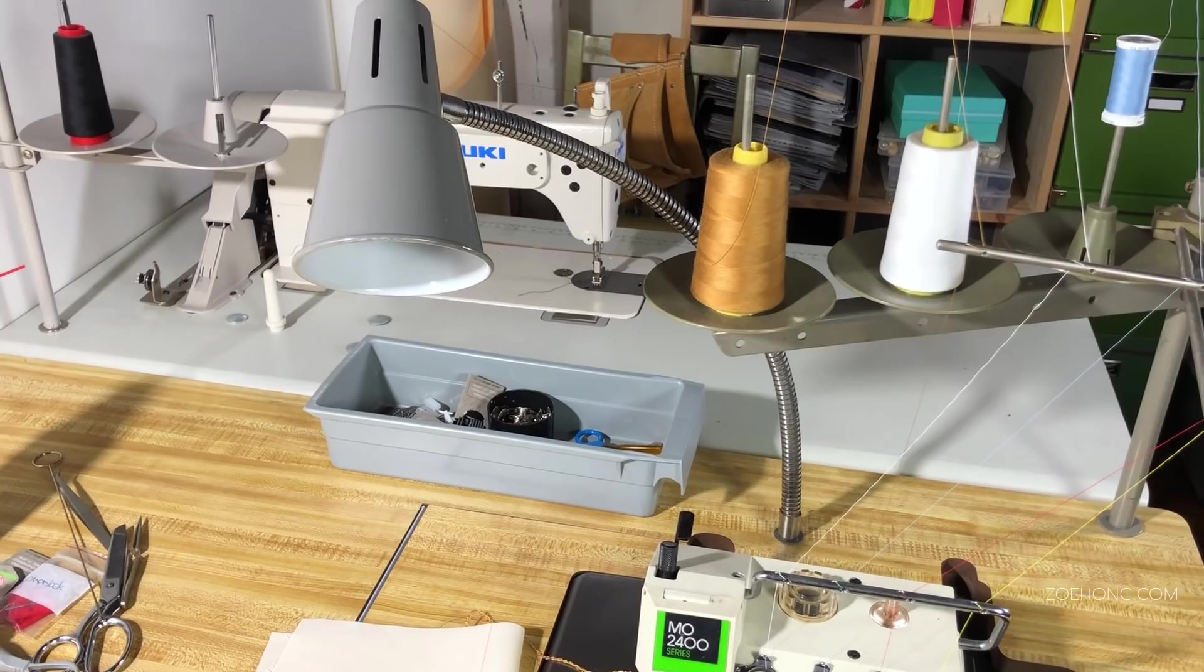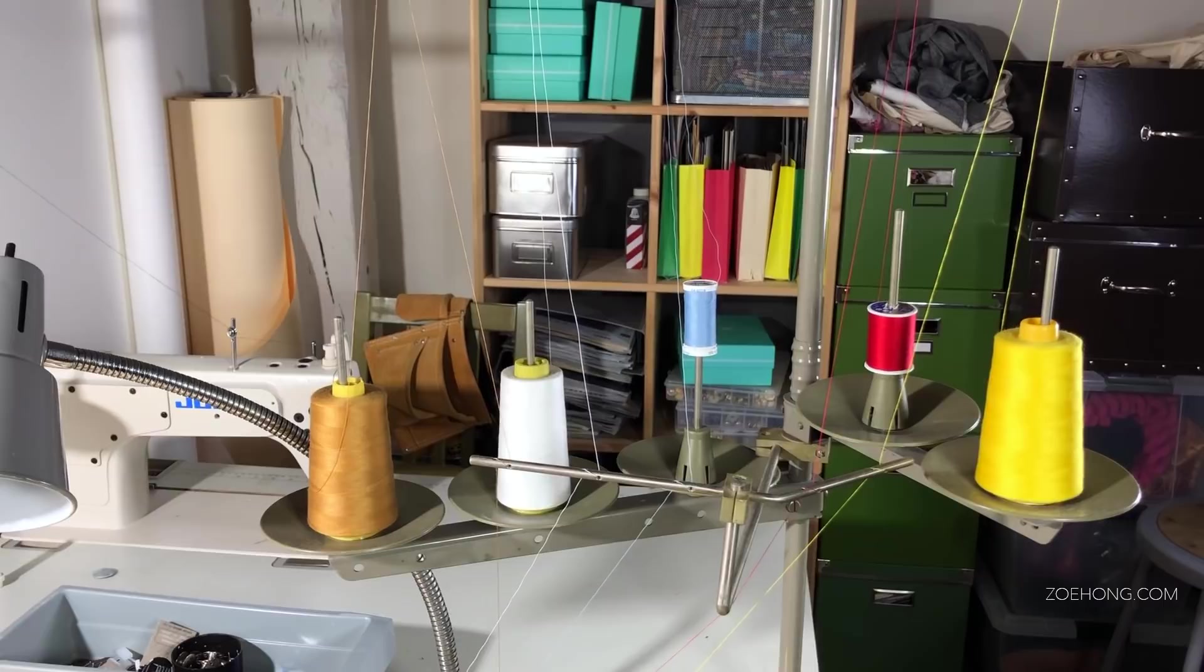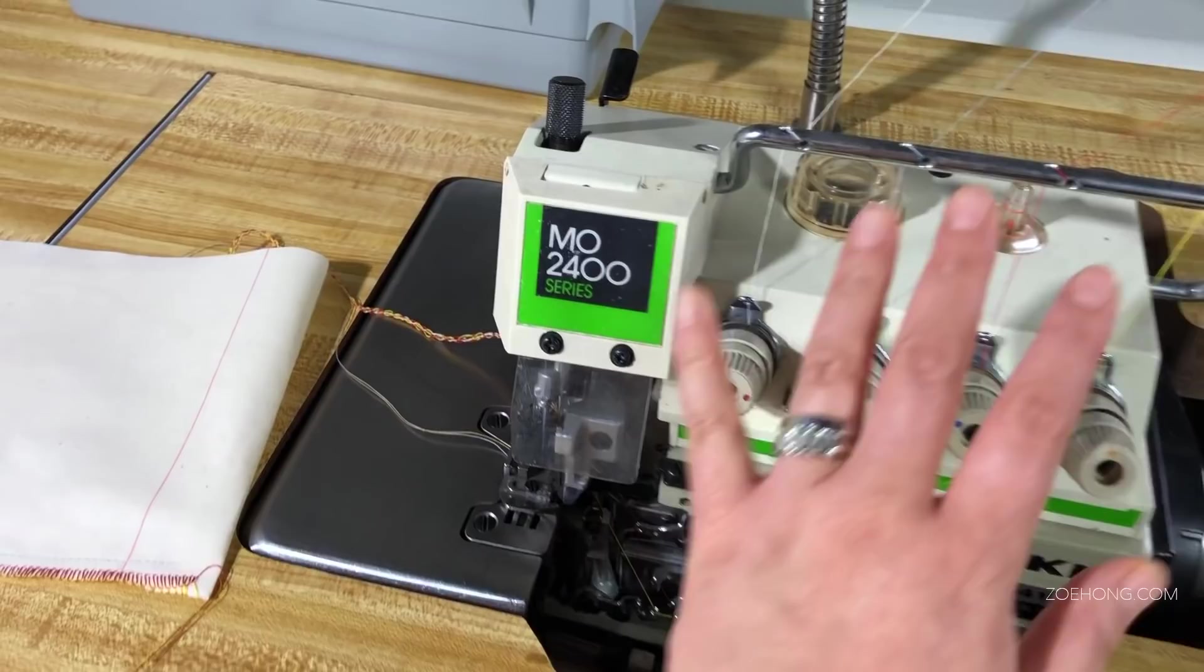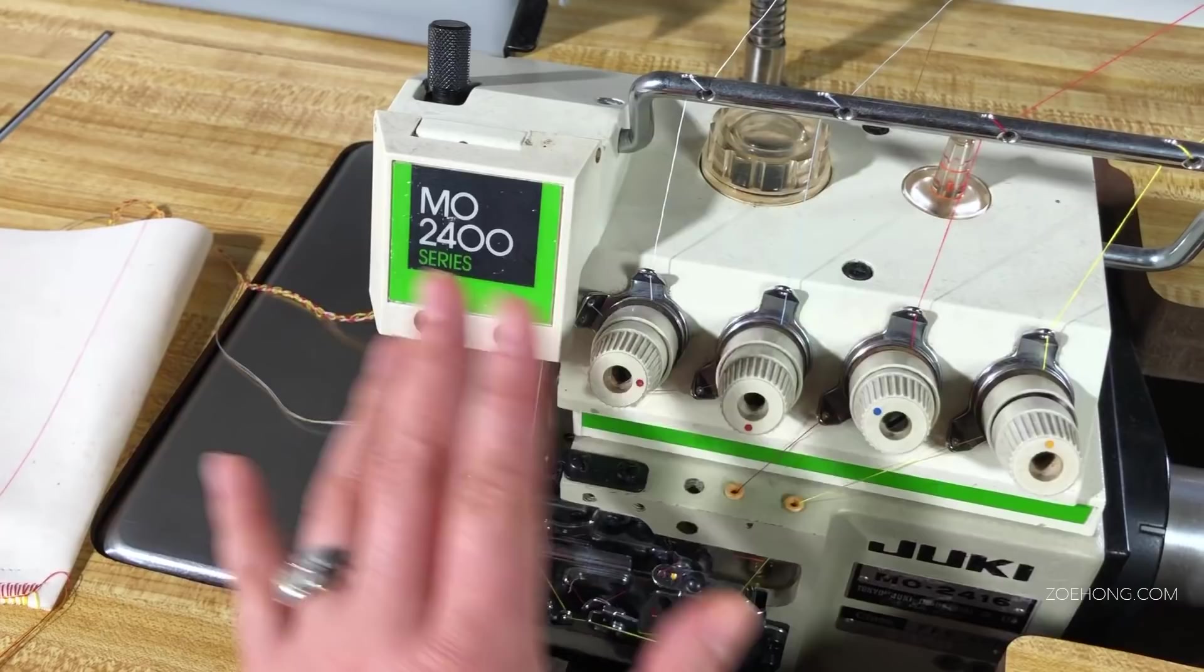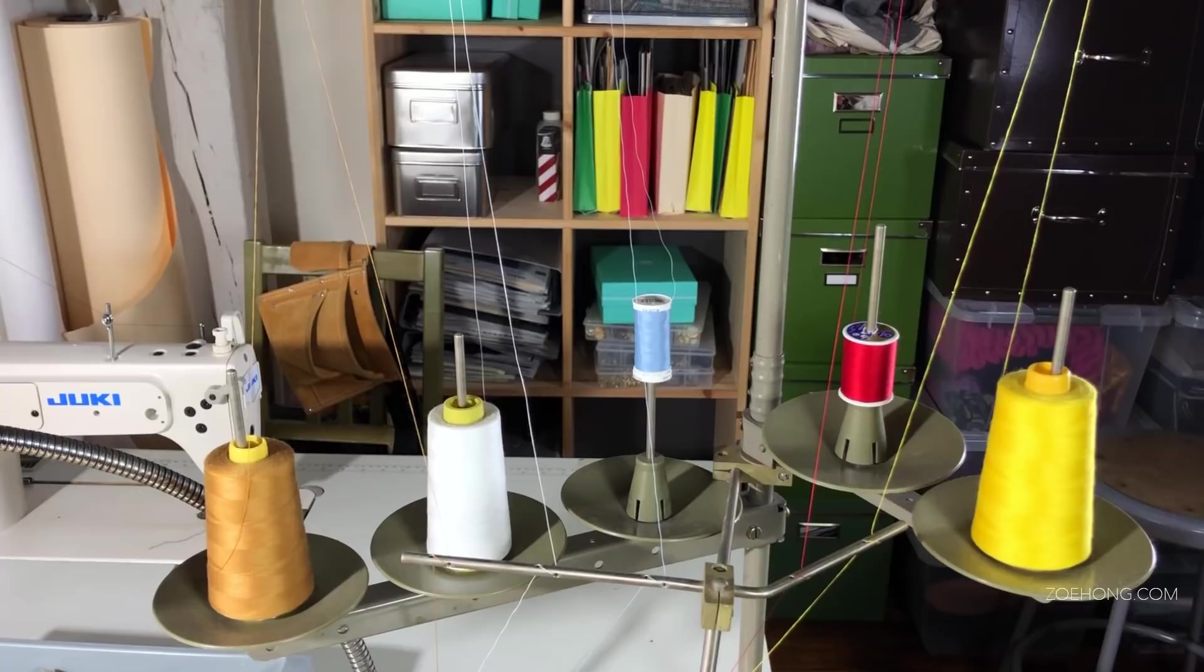You may have noticed I have five different threads going on. Why? Because this is the easiest way to set up your machine. You're going to be trying to thread five threads in this tiny little thing. Look, here's my hand for scale. It's a small machine and all these threads are going to overlap all over each other.